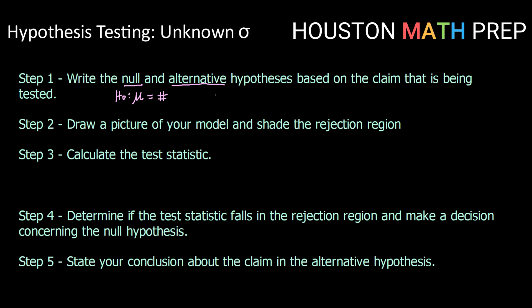We'll then write our alternative hypothesis or our h sub a, also about mu and that number, and we can fill that in with either greater than, less than, or not equal to.